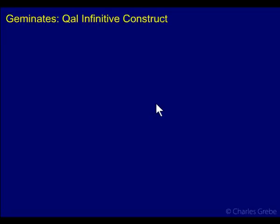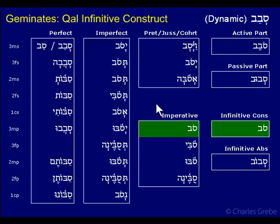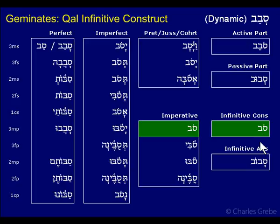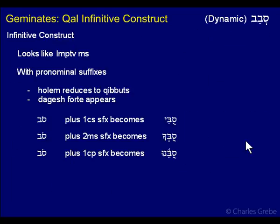Geminates. Qal infinitive construct. What can we say about an infinitive construct? The first and most obvious thing is that it is identical to the imperative, which is just like the strong verbs, and of course many other forms as well, not just the strong ones. So that's consistent. The infinitive construct looks like the imperative masculine singular.